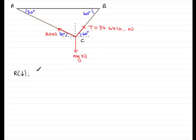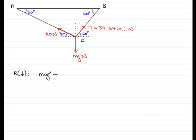So resolving downwards, if we start with this force, all of Mg acts downwards so that's just going to be Mg newtons acting downwards. Now we'll move on to the tension here in the string AC, 20 newtons. Because it's inclined to this vertical dotted line here, we need to find the component of 20 newtons that acts upwards. So because it acts upwards it's going to be minus, it's in the opposite direction.